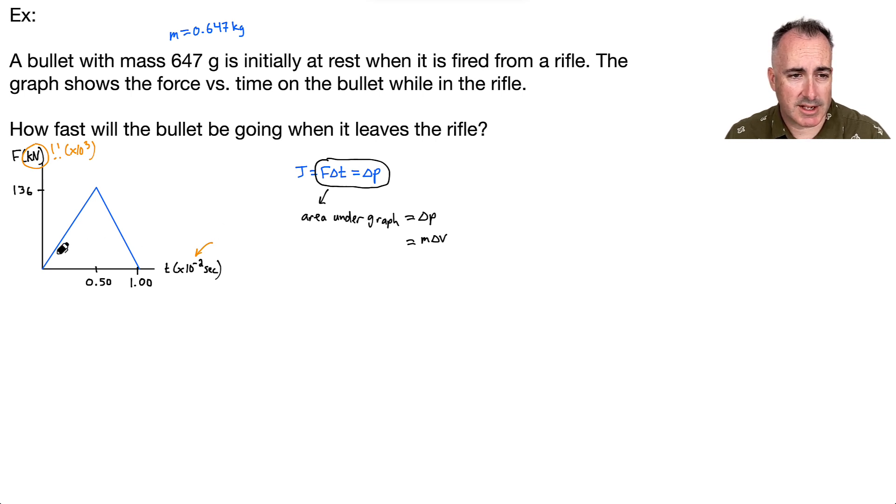The area of a triangle is base times height divided by 2. So in this case, it's going to be the base, which is 1 times 10 to the minus 2. So that means it's going to be 0.01 times 136,000. All that divided by 2. And why is that? Because this is a triangle. And that's going to equal M delta V.